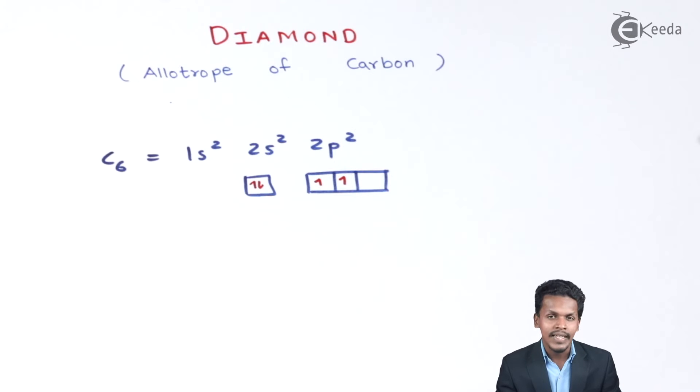It also depends on the hybridization, and in this case it is sp3 hybridized. The structure of each carbon, which is linked with 4 different carbon atoms, is tetrahedral.